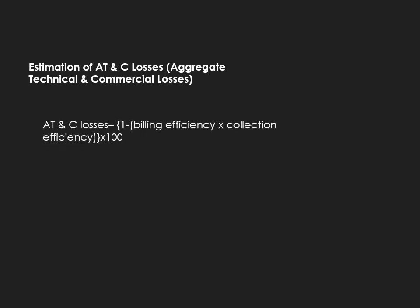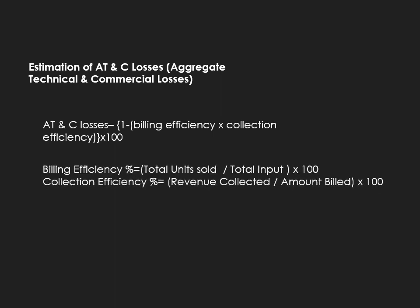This is an important formula for estimation of AT&C losses — Aggregate Technical and Commercial losses. Questions have come on this formula many times. The formula is: AT&C losses = (1 − billing efficiency × collection efficiency) × 100. Billing efficiency (%) = Total units sold / Total input × 100. Collection efficiency (%) = Revenue collected / Amount billed × 100. These formulas are helpful for both objective type and short answer type questions.